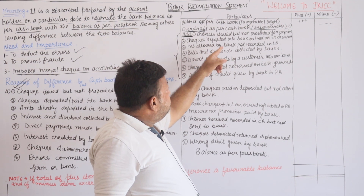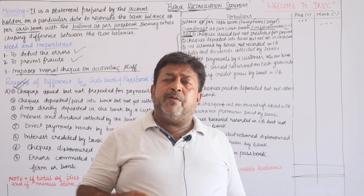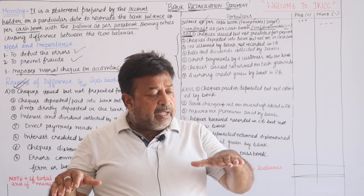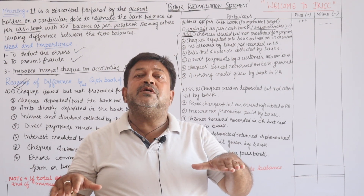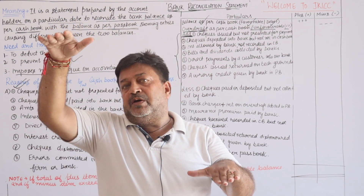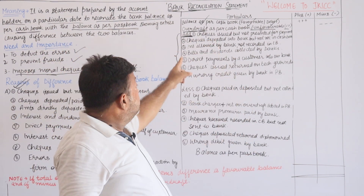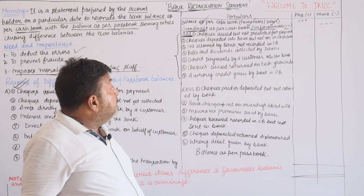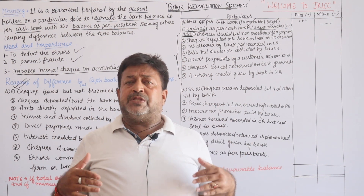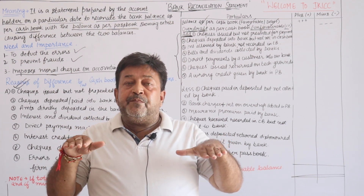Second item under additions: checks deposited into bank but not recorded in cash book — I deposited a check in the bank but didn't record it in the cash book, so the bank balance has increased. I will add it to reconcile. Third: interest allowed by bank — the bank gave me interest, so my pass book balance increased but I didn't record it in the cash book. I have to add it. But if it is overdraft interest charged, then it will be minus.